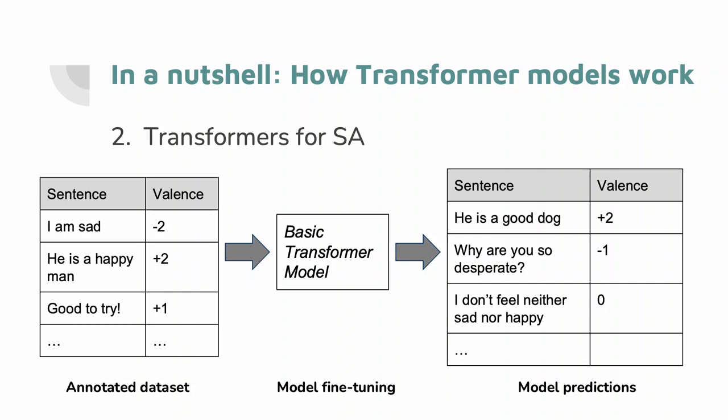The sentiment analysis diagram changes when compared to dictionary-based approaches. The starting point is now a dataset of manually annotated sentences. Then a basic transformer model, which already retains deep knowledge of human language, is fine-tuned to perform the task exemplified by the annotated dataset. Once it has learned how to do it efficiently, it can make predictions on never-seen sentences.